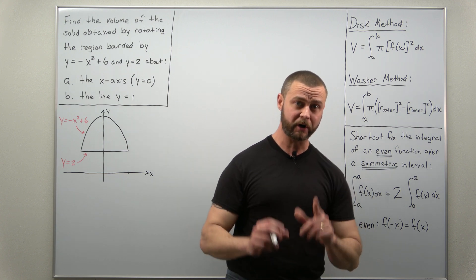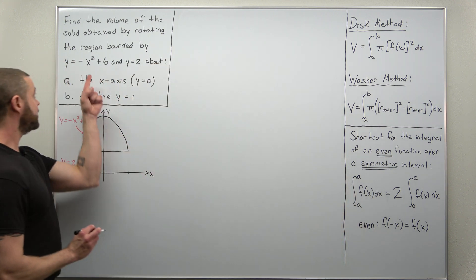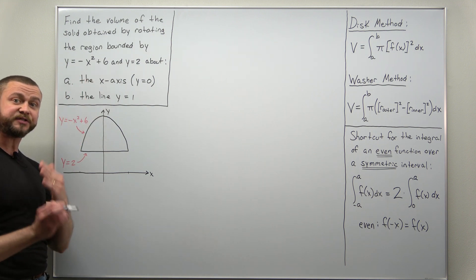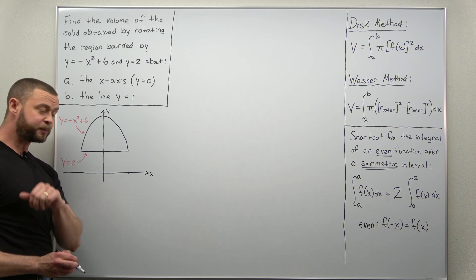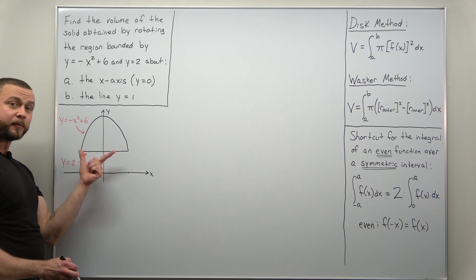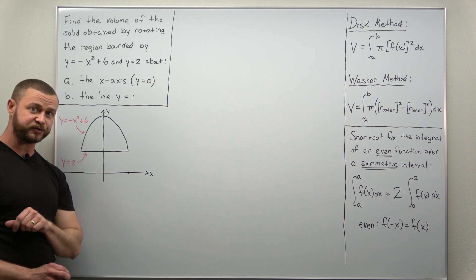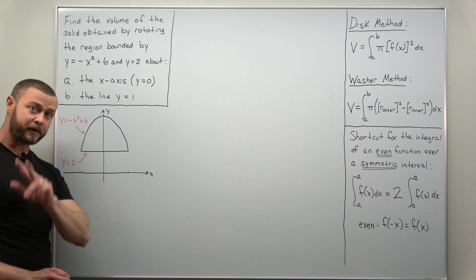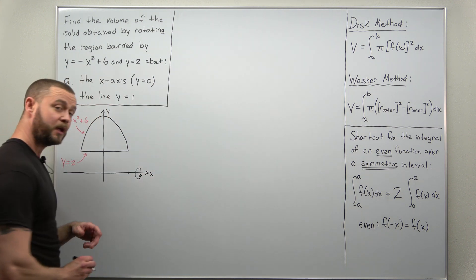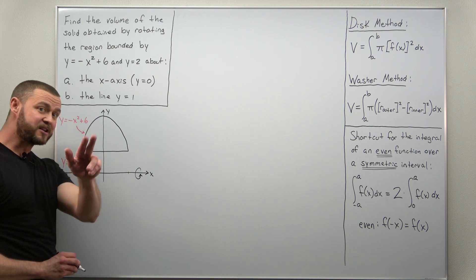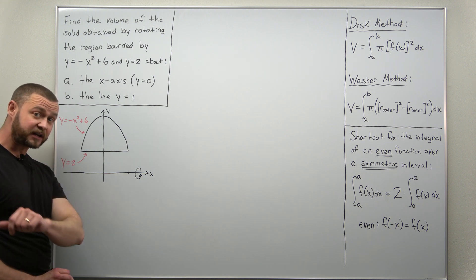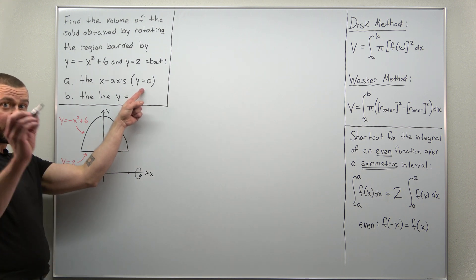Let's get started with part a. Our region is bounded by two curves: y equals negative x squared plus six and y equals two. The region is simple to sketch — it's an inverted parabola shifted up six units, and the bottom curve is the horizontal line y equals two. For part a, we're rotating this region about the x-axis, and we determine r outer and r inner relative to that axis of rotation, which has the equation y equals zero.